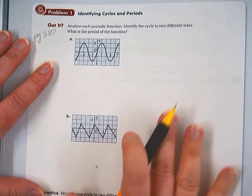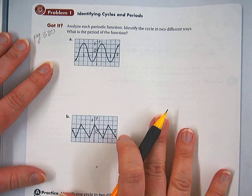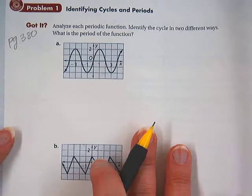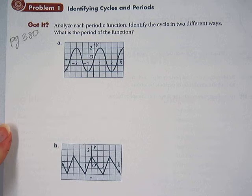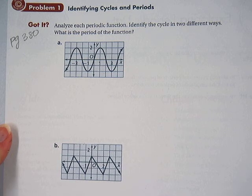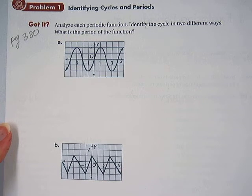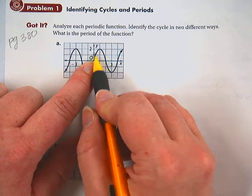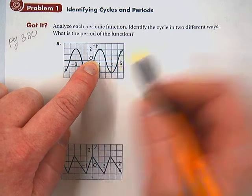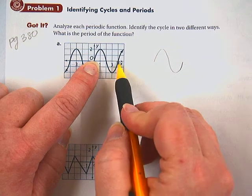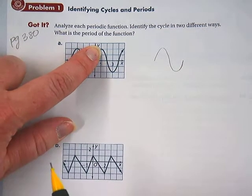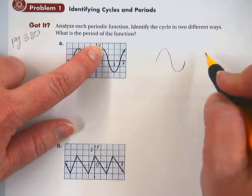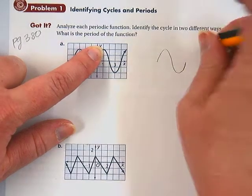Analyze each periodic function. Identify the cycle in two different ways. What is the period of the function? What do you think it means when it says analyze the period in two different ways? So the cycle of the graph is one whole repeat. Does it matter where that repeat starts and ends? No. So we could start here in the middle, on the midline, and say that one cycle of the graph goes from here to here. Or, so I'm just going to sketch that. So that could be one cycle of the graph. Or what if we started at the top of this wave right there instead, and then took it clear to where it goes back to the top here. Right? Are those both okay ways of identifying the cycle of the graph?